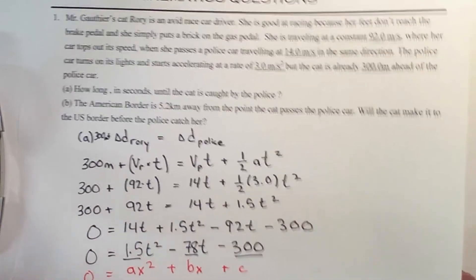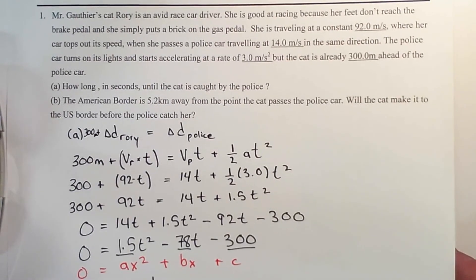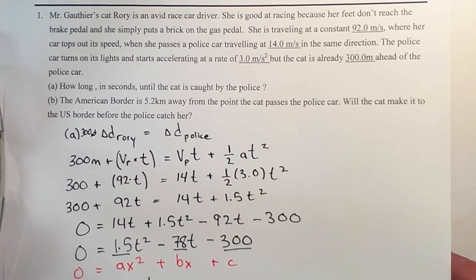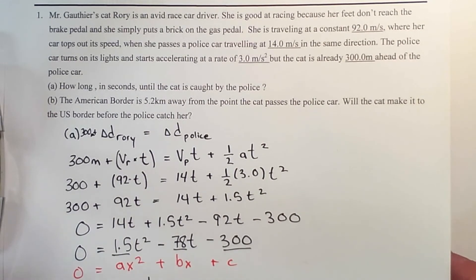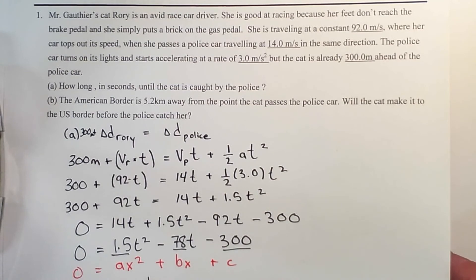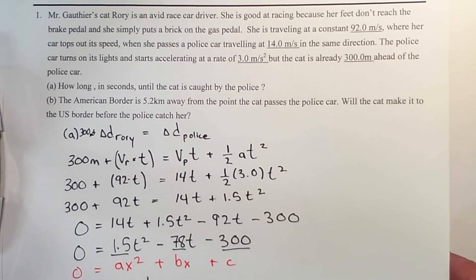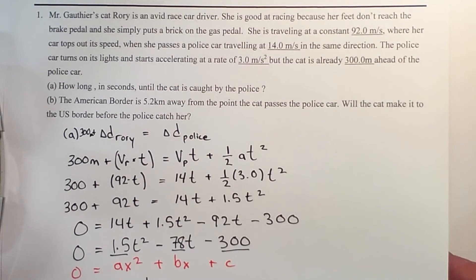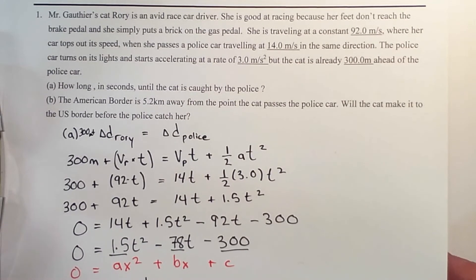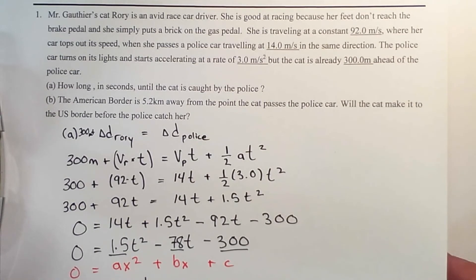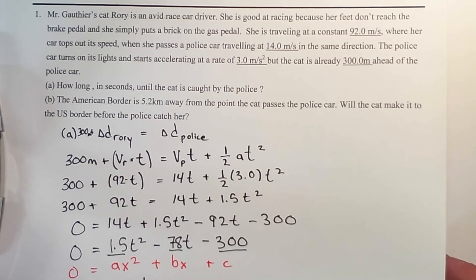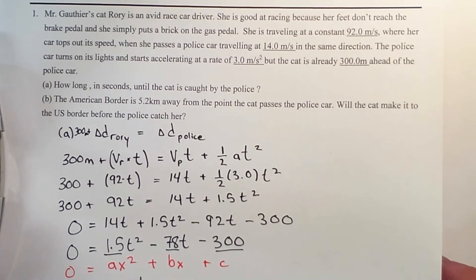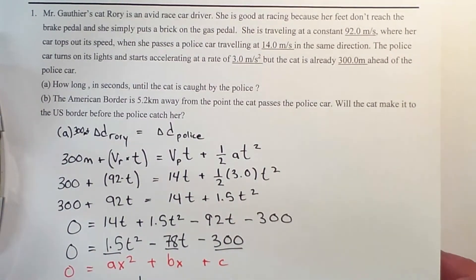For part B of this question, it says the American border is 5.2 kilometers away from the point the cat passes the police car. Will the cat make it to the U.S. border before the police catch her? So we just need to figure out how far she went. And even though we're looking at how far the cat went in this particular problem, realistically it's how far the police went because that's who got passed.